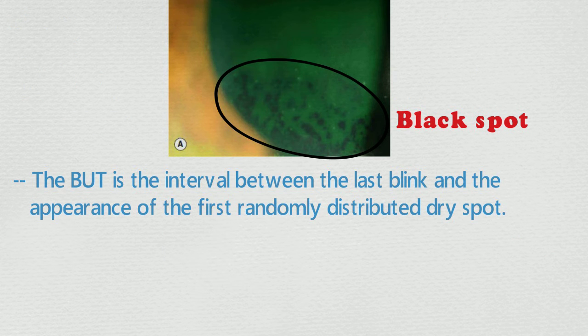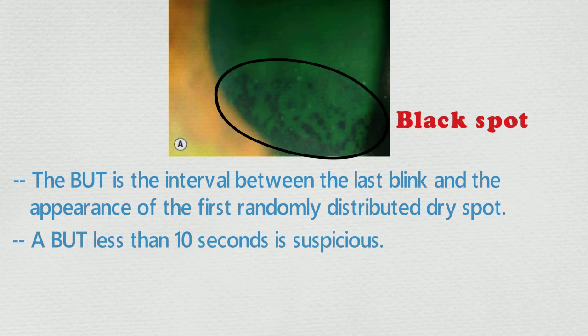The tear breakup time is the interval between the last blink and the appearance of the first randomly distributed dry spot. A tear breakup time less than 10 seconds is suspicious.